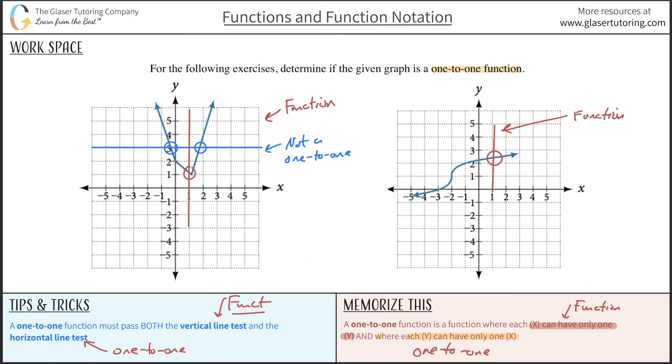Now we've got to do the horizontal line test. So draw a whole bunch of horizontal lines and see if this intersects the graph in more than one location. And it doesn't, no matter where I draw it. So since it does not intersect more than once, it passes the horizontal line test and we can now qualify this to be a one-to-one.